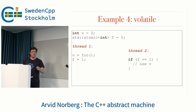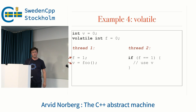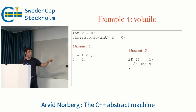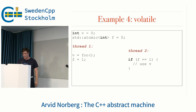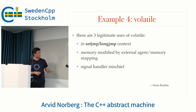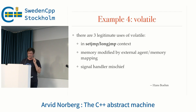There's a question about whether making both v and f volatile would help. The answer is: by using an atomic and setting f to 1, you're telling the compiler there is some other thread that you're communicating with — and it will not only refrain from moving anything past that point, but also emit instructions to the hardware preventing reordering after that point. As Hans Boehm noted, there are only three legitimate uses for volatile: setjmp/longjmp context, memory modified by an external agent or memory mapping, and signal handler mischief. If you're not doing one of those things, volatile might not be for you.